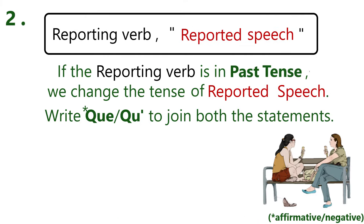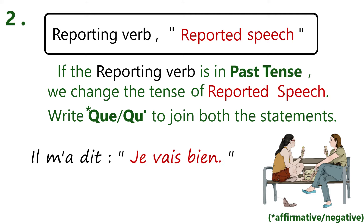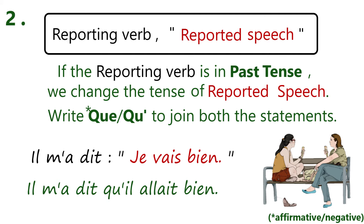Rule number two: if the reporting verb is in past tense, we change the tense of the reported speech. Write 'que' to join both the statements. For example, 'il m'a dit je vais bien.' The reporting verb is in past tense — 'a dit' — it is passé composé. So we will change the tense of the reported speech also: 'il m'a dit qu'il allait bien.'